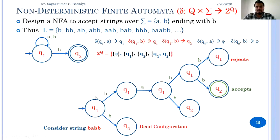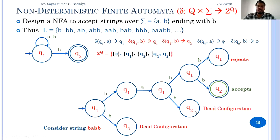If the automata stays in q1 after reading the last B, the string is read completely but there is no final state reached, so it will reject. But if in q1 on B we go to q2, this is an accept state — the automata started from the initial state, read the complete string, and reached a final state, so it will accept. The other path through q2 receiving B also leads to a dead configuration. Three of the four cases reject the string, while one case accepts. To determine acceptance of a string in NFA, we must consider all possible transitions.